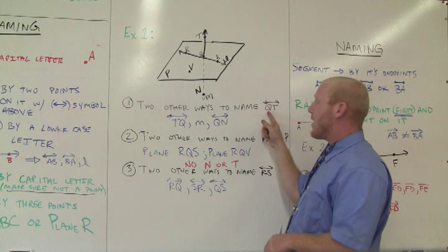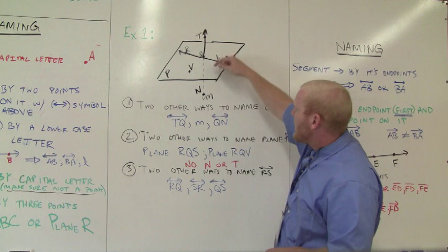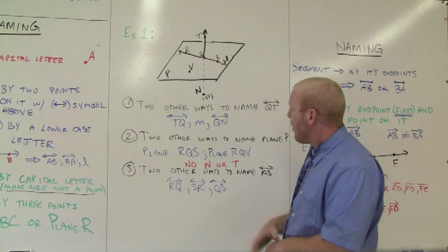So this is my line QT. Obviously, I can flip it around and I can say line TQ. Make sure you have the symbol down here. This actually is line M. So that's line M. Or QN. Q and N are on this line, so it can be line QN.